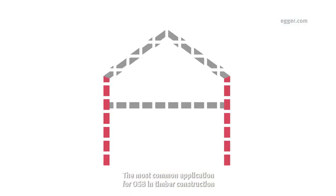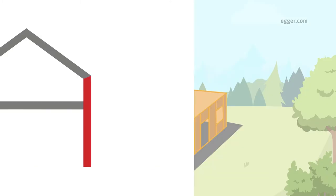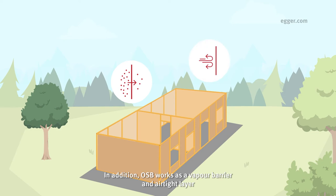The most common application for OSB in timber construction is the use in exterior walls. The transfer of loads as well as the bracing are the key functions of OSB in exterior walls. In addition, OSB works as a vapor barrier and airtight layer, which allows you to skip foils and membranes in construction.